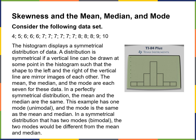In a perfectly symmetrical distribution, the mean and the median are the same. This one only has one mode — it's unimodal — and the mode is the same as the mean and median. In a symmetrical distribution with two modes — bimodal — the two modes would be different from the mean and the median.